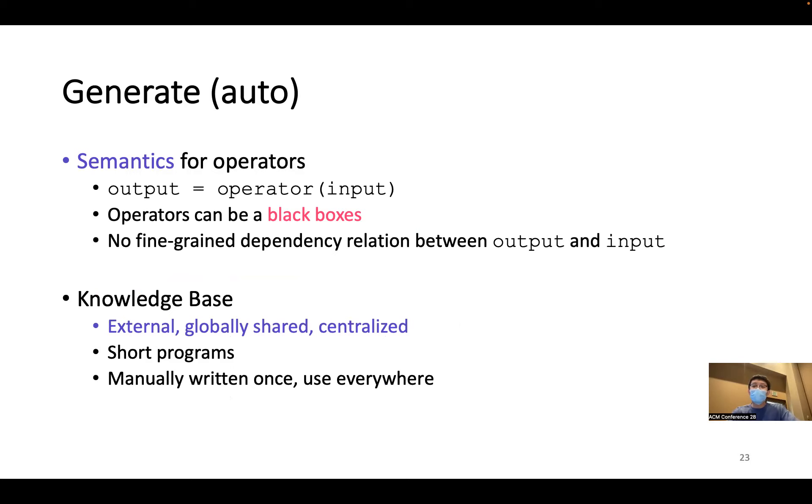So therefore, we propose to use an external, globally shared, centralized knowledge base to capture the semantics of software libraries. So for each operator of interest, this knowledge base contains short programs that establish the relation between the inputs and outputs of different units. And the bad news is the KB has to be manually written, but only once, and it can be used everywhere. For more detail for this knowledge base, please refer to the paper.